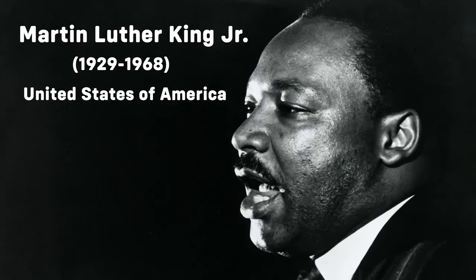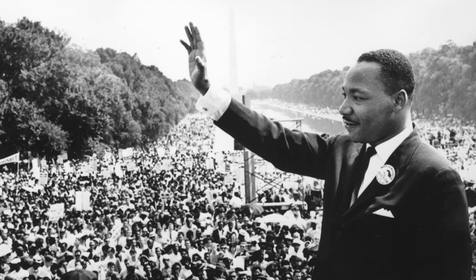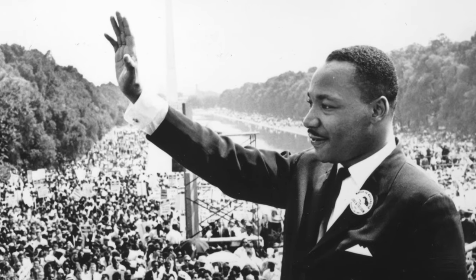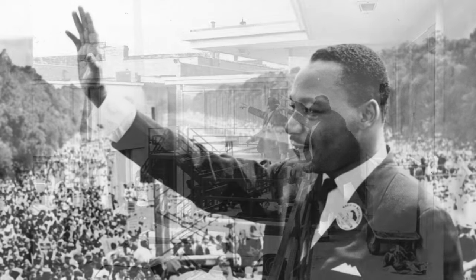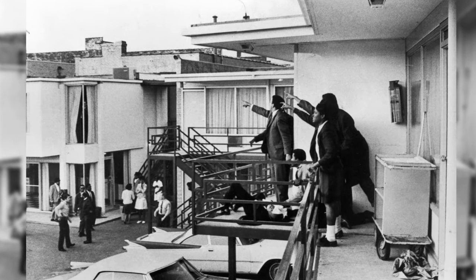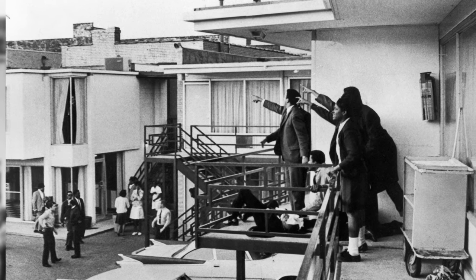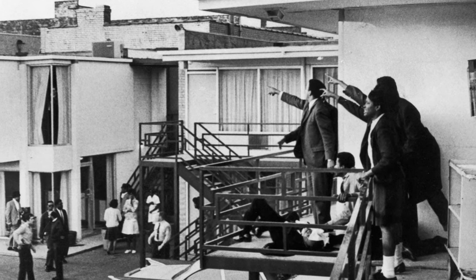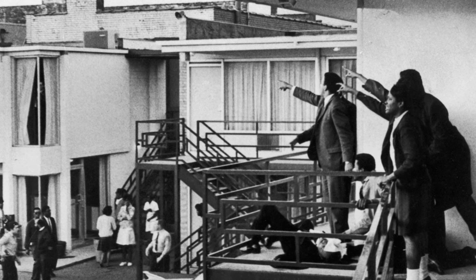Martin Luther King Jr. was a prominent leader in the American Civil Rights Movement, advocating for racial equality through nonviolent protests. James Earl Ray assassinated King on April 4, 1968 in Memphis, Tennessee. Ray, a racist and escaped convict, was reportedly motivated by his hatred of King's advocacy for civil rights and racial equality. King's assassination deeply affected the civil rights movement and American society, sparking outrage and further fueling the push for racial equality and justice.